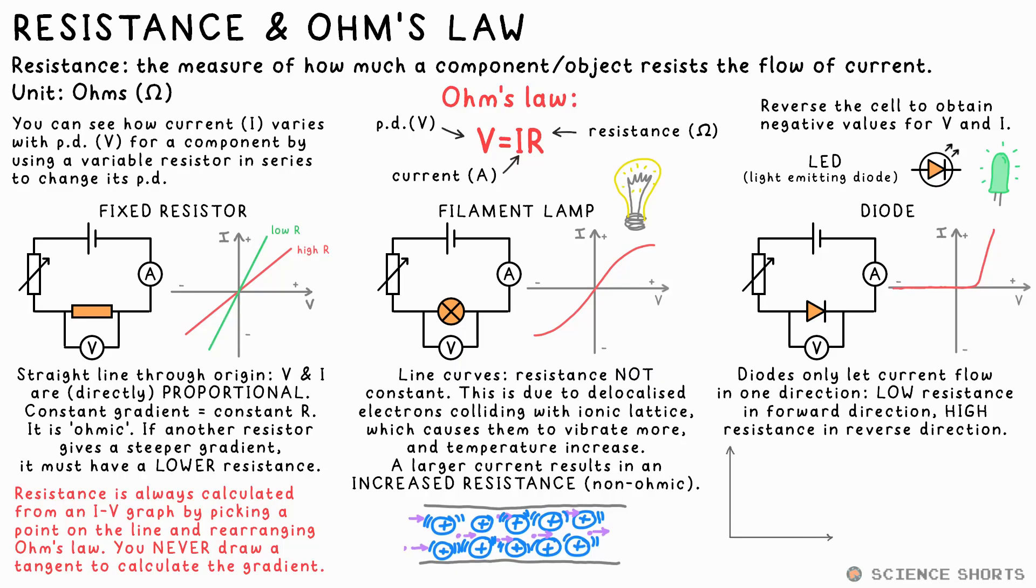A superconductor is a material that can have a resistance of zero. Not nearly zero, actually zero. Generally, these materials need to be cooled before they reach this point, though. So you might see a graph like this. As the temperature goes down, so does the resistance, until we hit what we call the critical temperature. Below this critical temperature, the resistance is zero.